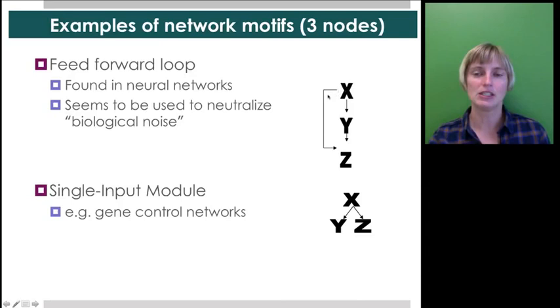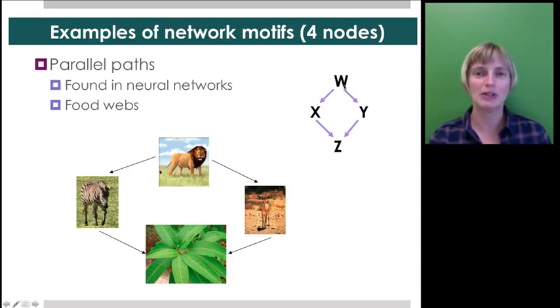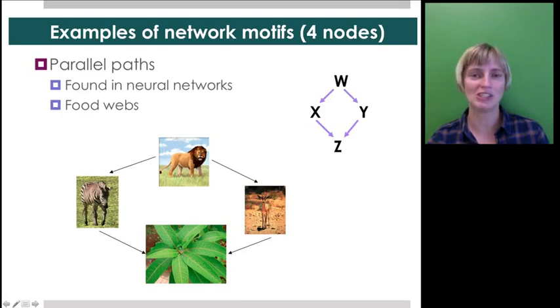And so, the feedforward loop occurs often in neural networks, and it seems to be used to neutralize biological noise, because x activates y activates z, but x also directly activates z. You can encounter other things. So, a single input module might be found in gene control networks, where x might be activating a number of other genes. You can up it to four nodes. Why stop at three? Well, I'm going to tell you in a sec why you might want to do that, but here is a four node motif that has parallel paths, and these you might find in neural networks and in food webs. So, the lion who eats the zebra and the antelope, who are in turn each munching some greenery.